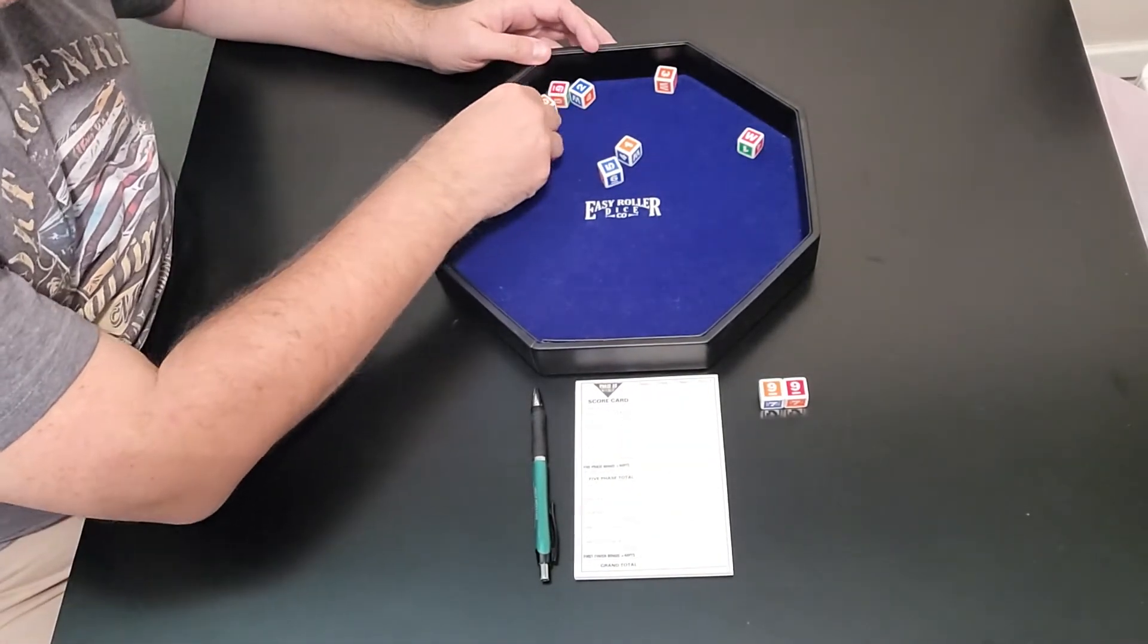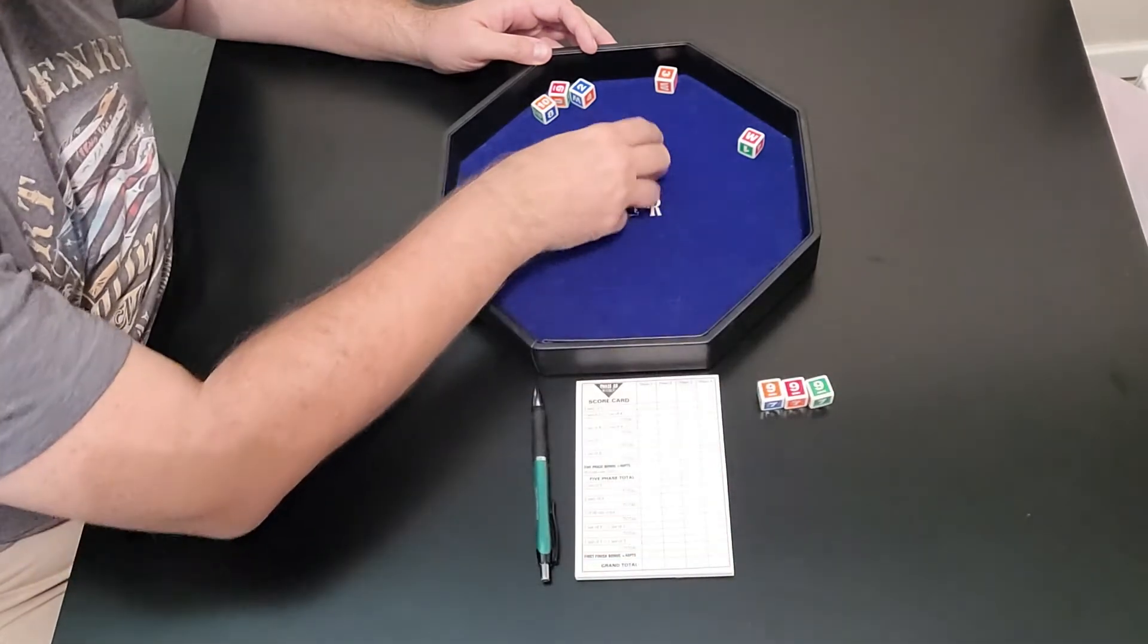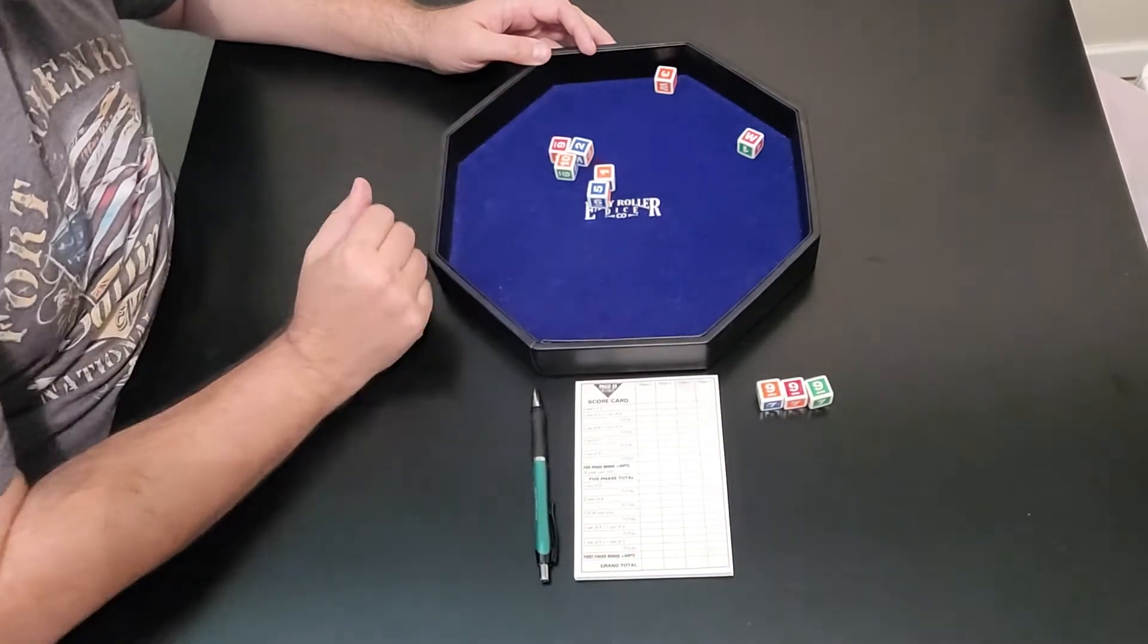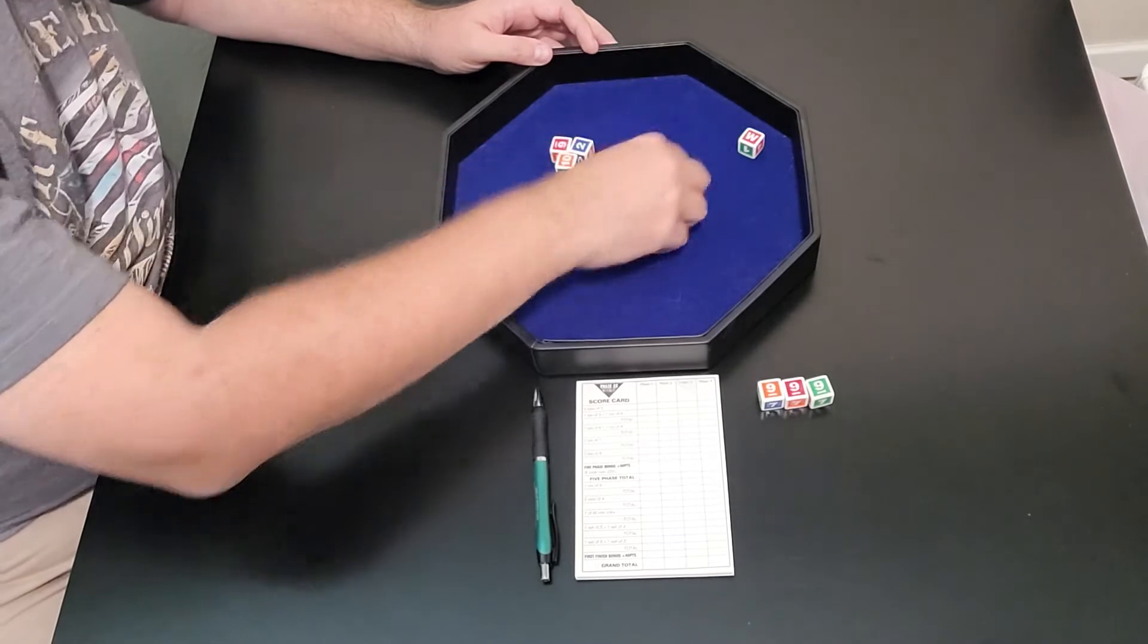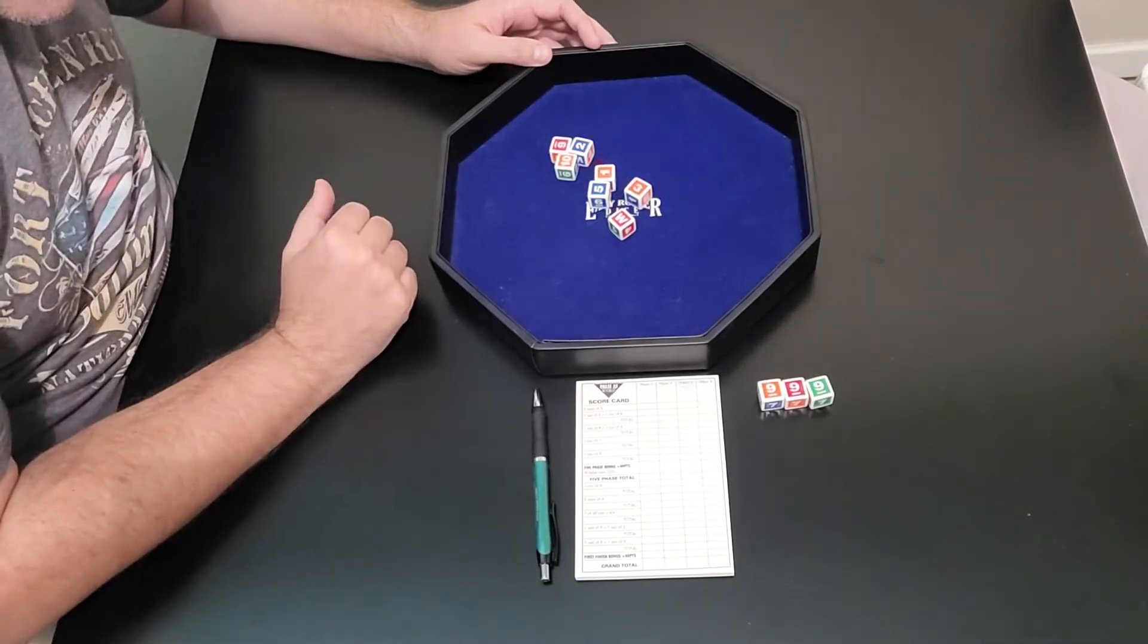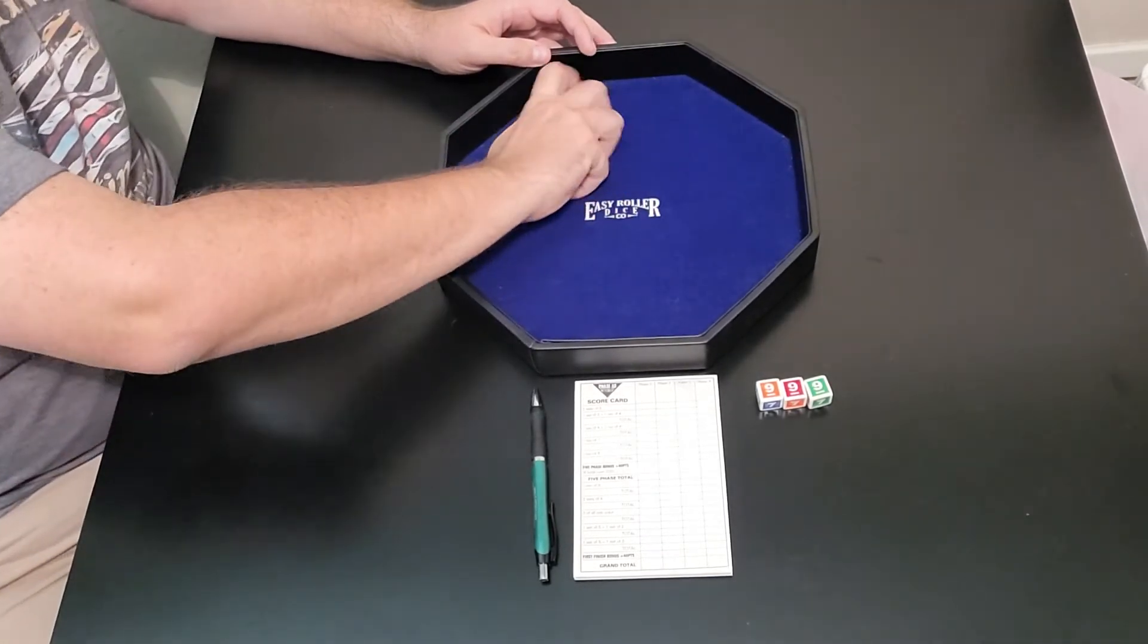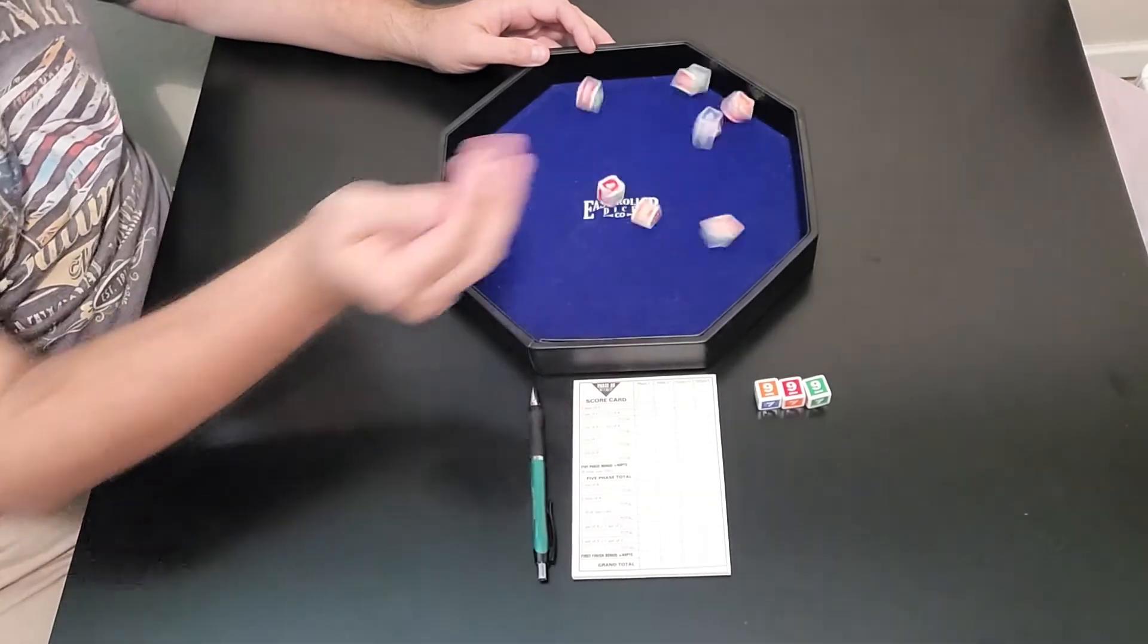We've got another 9, so that's good. We've got 3 9s. And wow, I'm just not rolling very well at all, am I? Yikes. That's not going to do any good. So let's go ahead and do one more roll. See if we can get a set of 3 here to finish that off.